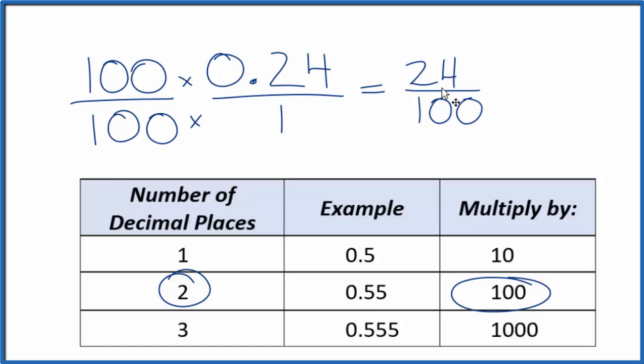Let's reduce this further. 4 goes into 24 6 times. 4 goes into 100 25 times. So we could simplify this fraction down to 6 25ths.